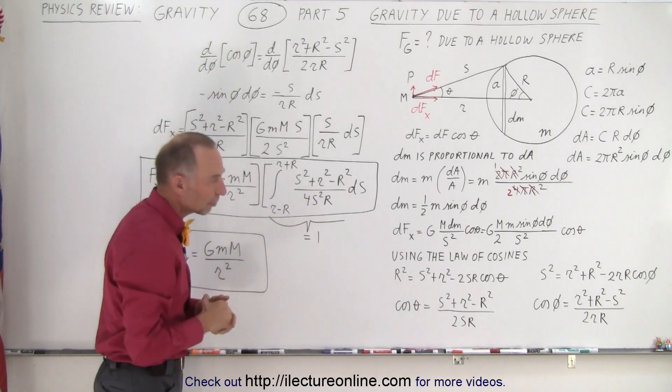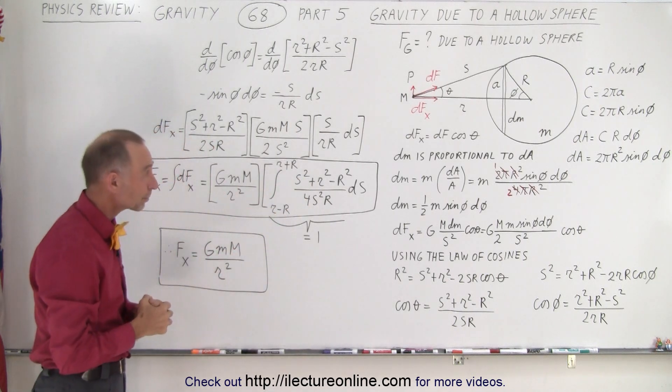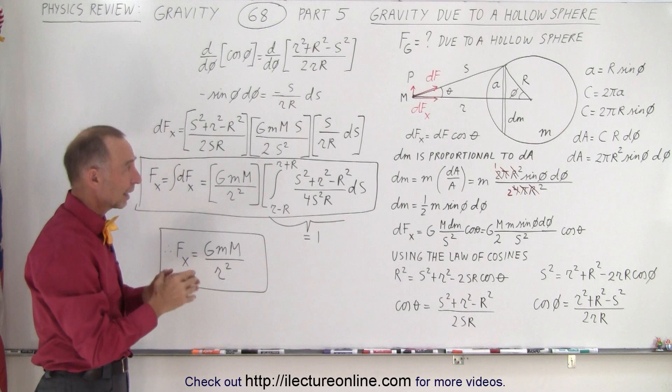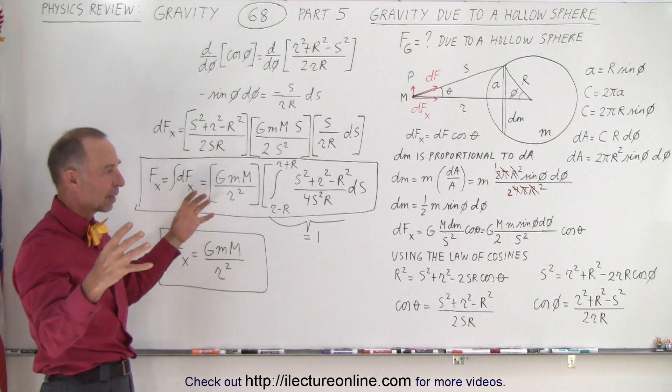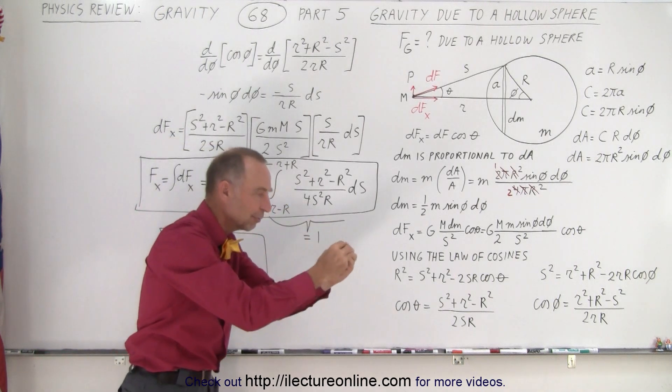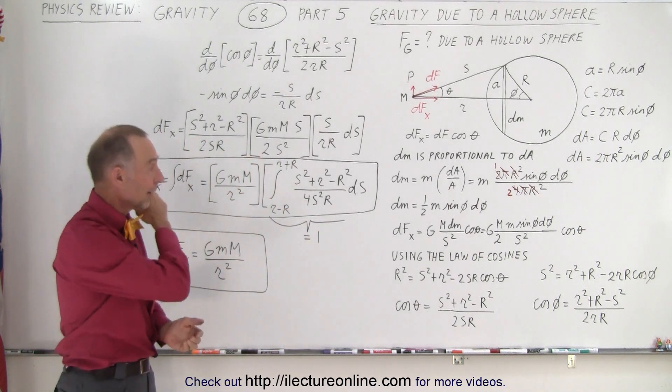And that's why we start with the hollow sphere, because it's easy to integrate, which shows you that the force of gravity outside a spherical object is as if all the mass of the spherical object is concentrated at the center of mass. And this is how it's done.